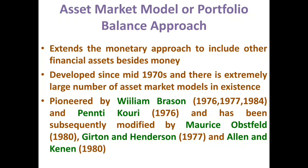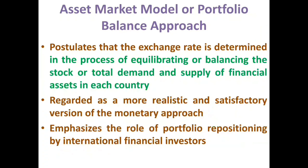The literature was developed since the mid-1970s and there are a large number of asset market models in existence. The approach was pioneered by William Brazen and Pentty Corey and has been subsequently modified by Morris of Field, Gerton and Henderson, Allen and Cannon, etc. The model postulates that the exchange rate is determined in the process of equilibrating or balancing the stock — the total demand and supply of financial assets — in which money is one of the financial assets. So it considers more than one financial asset, and is regarded as a more realistic, comprehensive, and satisfactory version than that of the Monetary Approach.